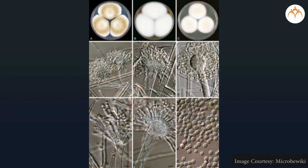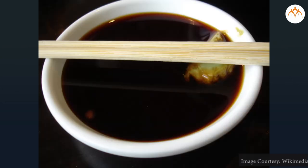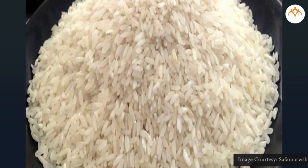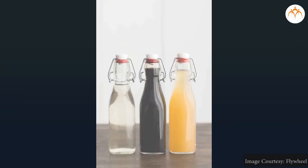Next, Aspergillus oryzae — it is a fungus used to make soya sauce, rice vinegar, and is also used in the preparation of alcoholic beverages. Thus, we can conclude that these microbes are used for various industrial applications.